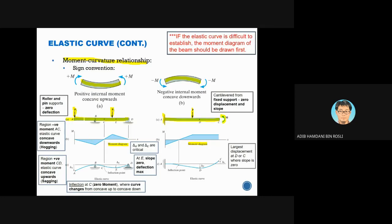The moment diagram tells you what kind of elastic curve will occur. For example, if you draw the moment diagram and find that from A to C you have a negative moment while between C and D you have a positive moment, it means between A and C the beam is concave downwards, while between C and D it is concave upwards.